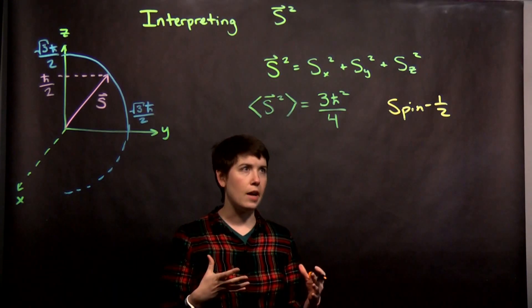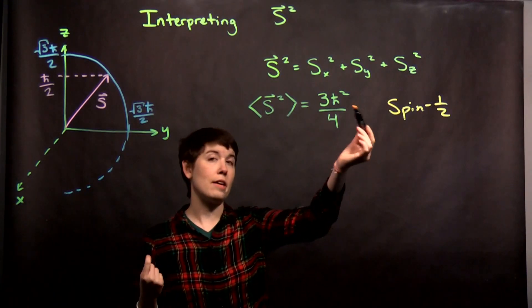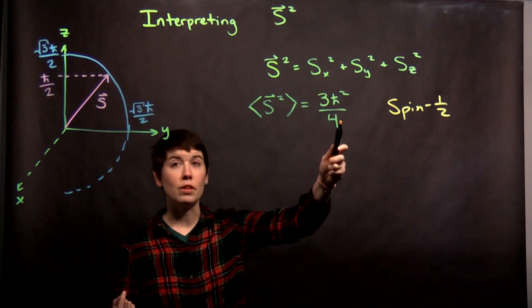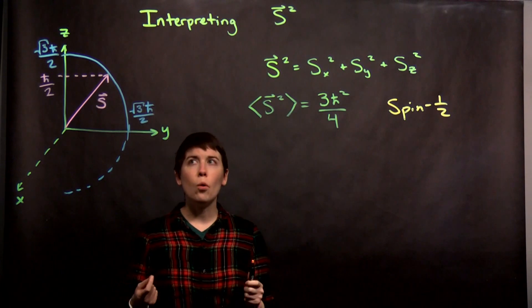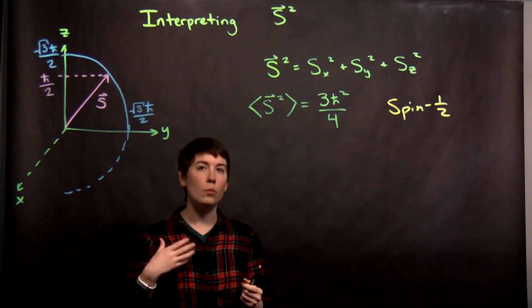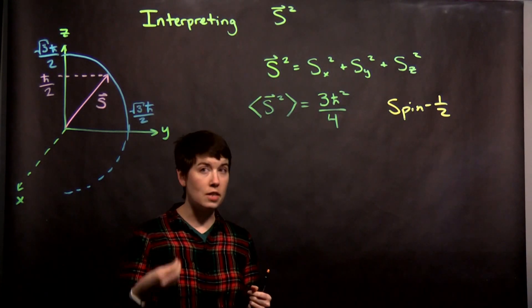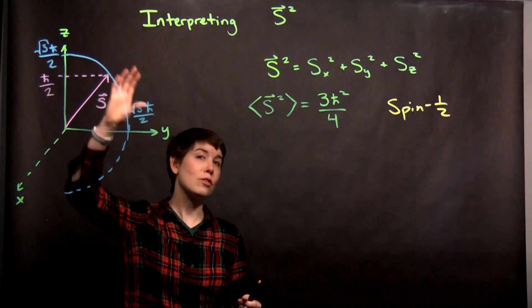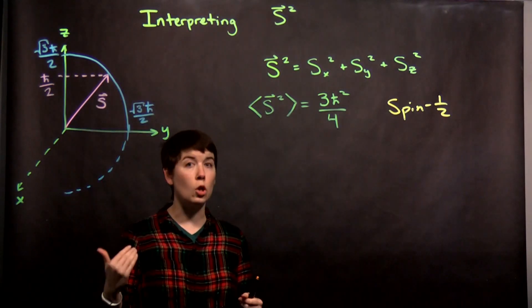So because of that, we can always get the exact same value here. We know exactly what the length is. But now, one way to think about this is that when we then try to measure the orientation of spin, we in fact are getting the projection of the spin vector along a direction.